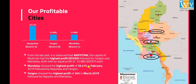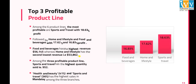As evident from the bar plot, Naypyidaw, the capital of Myanmar, has the highest profit, followed by Yangon and Mandalay. The top three profitable product lines are Sports and Travel, Home and Lifestyle, and Food and Beverages — where Food and Beverages has the highest revenue, Home and Lifestyle has the second lowest revenue, and Sports and Travel has the highest quantity sold.